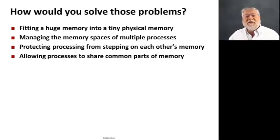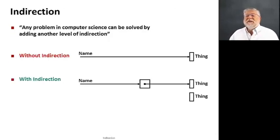So how would you go about solving these problems? It turns out there's one important technique that comes up over and over again in computer science that can help us with all of these. And that technique is called indirection.